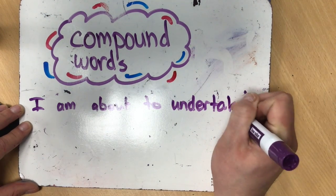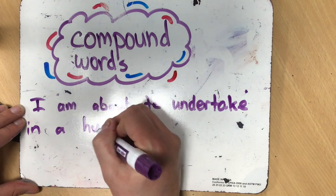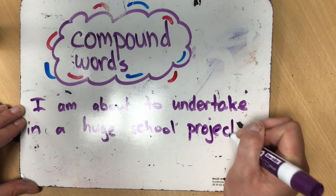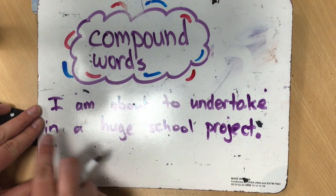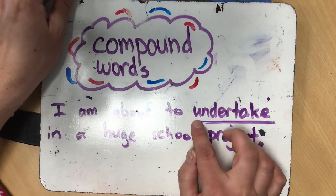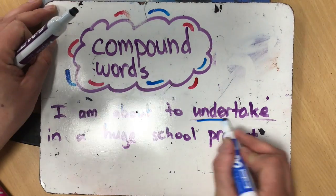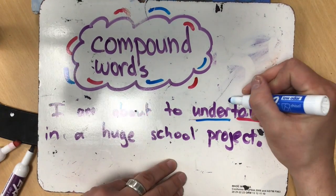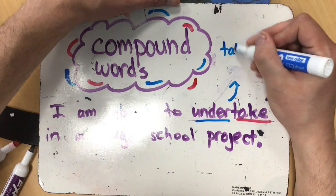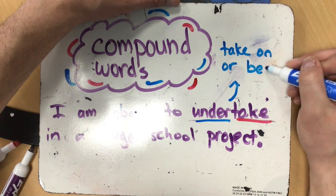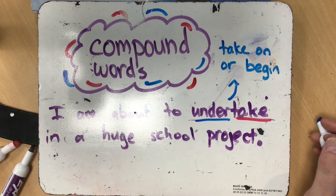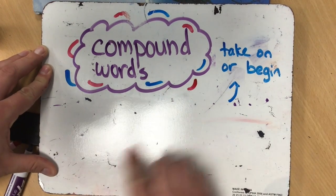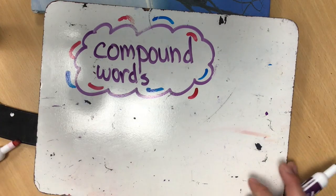Let's take a look at another sentence: I am going to undertake a huge school project. So undertake does not mean that you're going to take something underground — you're not going to be like a little troll hiding treasure in a cave. Undertake really means to take on, to begin something, or to start a brand new challenge. So when we say you're going to undertake a huge school project, it means you're about to start this big school project.